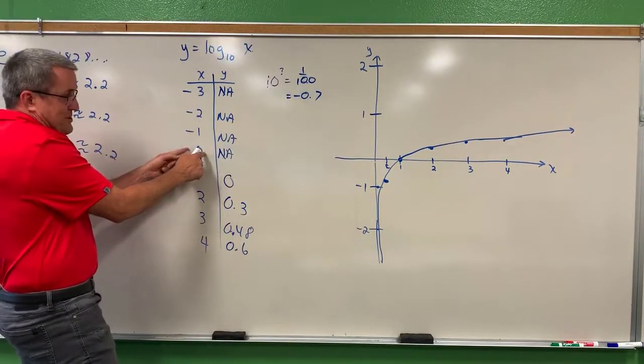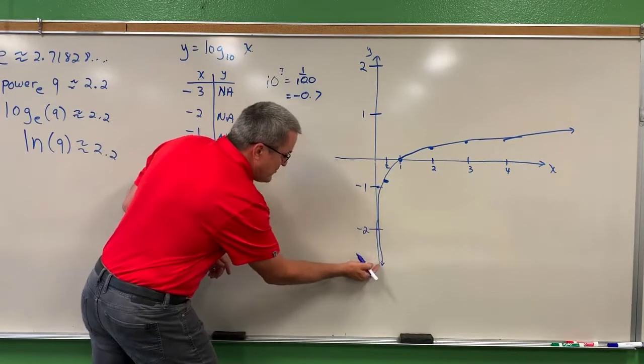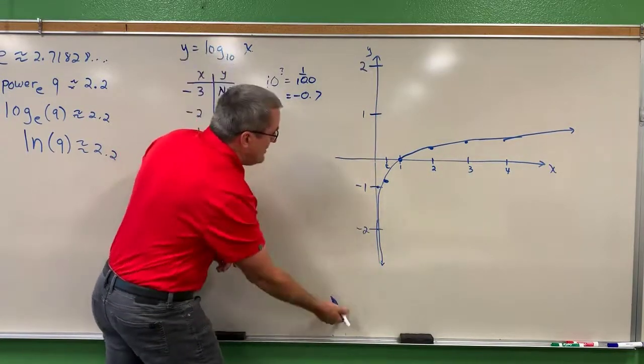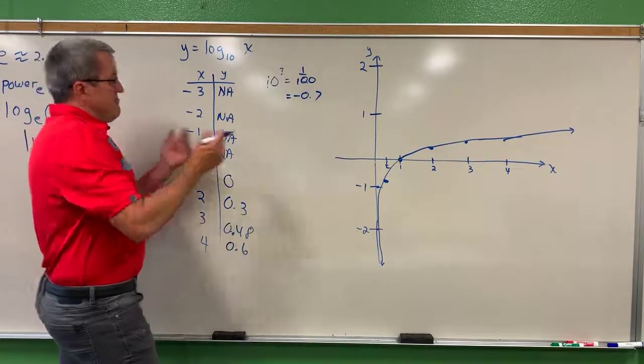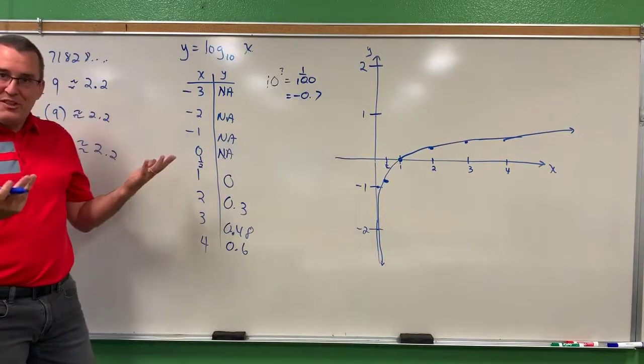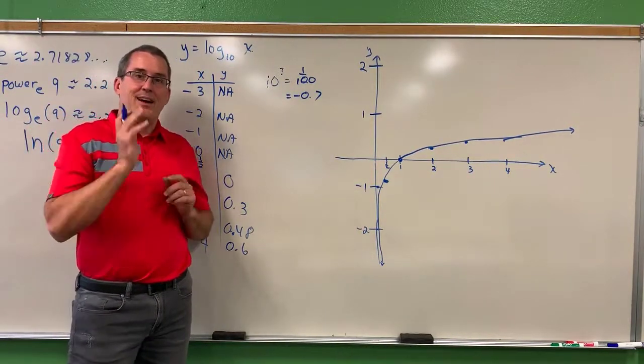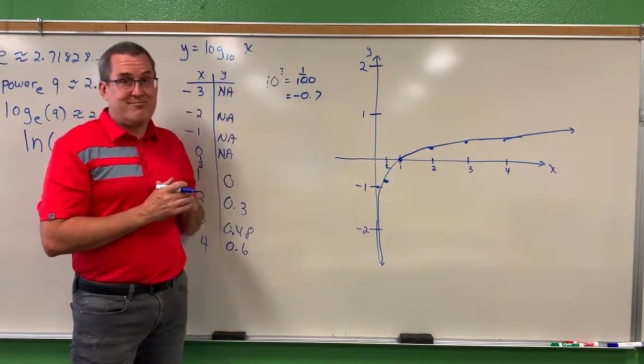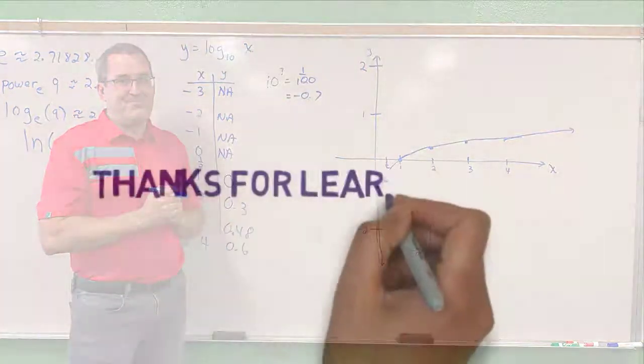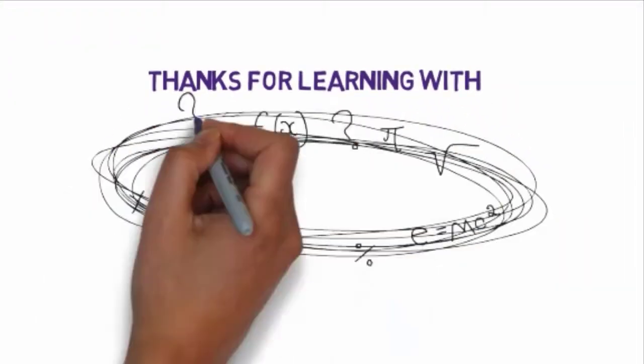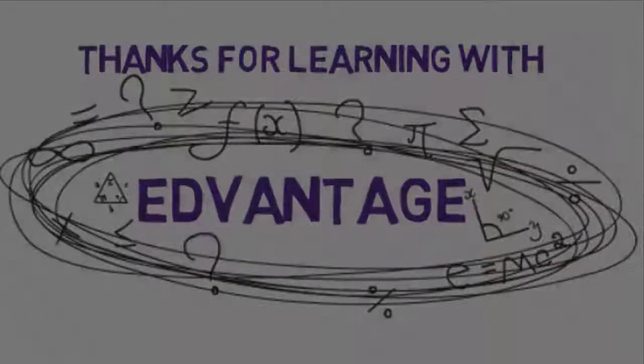But remember, there's no such a thing as an input value of 0. And so this graph just gets really close to that output axis, that y-axis, but never ever touches it. So you have roughly the shape of a logarithmic function. And I challenge you, try something other than base 10 and play with it and see what the graphs would look like.